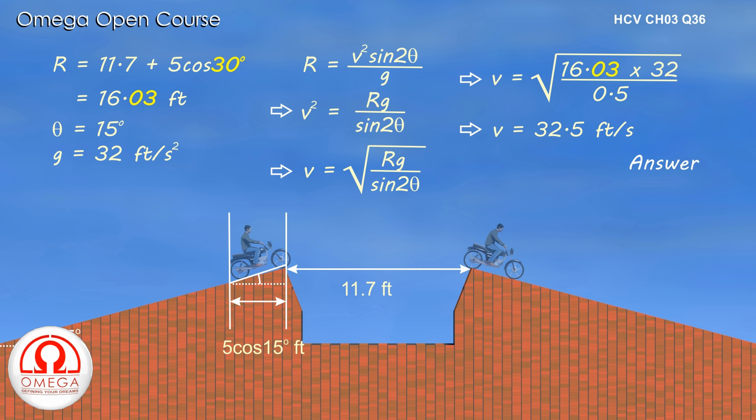Now putting this value in the expression for v, we get v = √(16.03 × 32 / 0.5). Simplifying, we get v = 32 feet per second. But this cannot be done. Angle of inclination is 15 degrees, not 30 degrees.